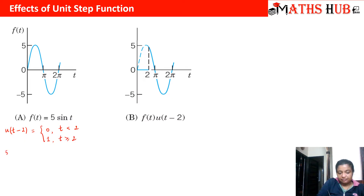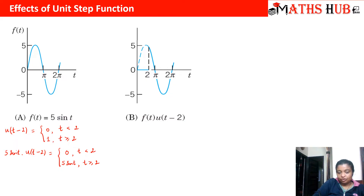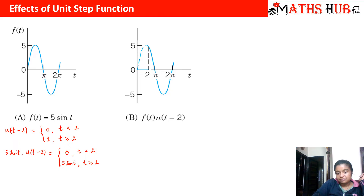When we multiply f(t) = 5 sin(t) with the unit step function, the product becomes 0 whenever t is less than 2, and 5 sin(t) whenever t is greater than or equal to 2. So before t = 2 everything is 0 — shown with a dotted line — and after t = 2 the function behaves like 5 sin(t). So from 0 to 2 the function takes value 0, and after 2 the behaviour is the same as 5 sin(t).